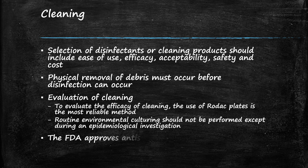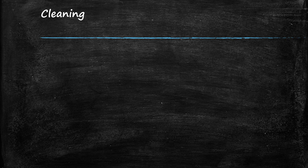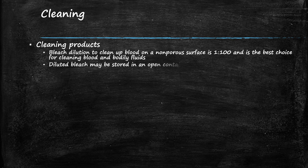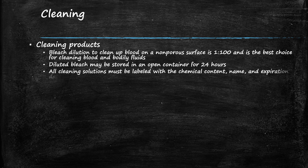The FDA approves antiseptics along with medications. Bleach dilution to clean up blood on a non-porous surface is a 1 to 100 ratio and is the best choice for cleaning blood and bodily fluids. Diluted bleach may be stored in an open container for up to 24 hours. All cleaning solutions must be labeled with the chemical content name and expiration date. The practice of topping off cleaning products from a larger bottle is prohibited as this practice may lead to cross-contamination.